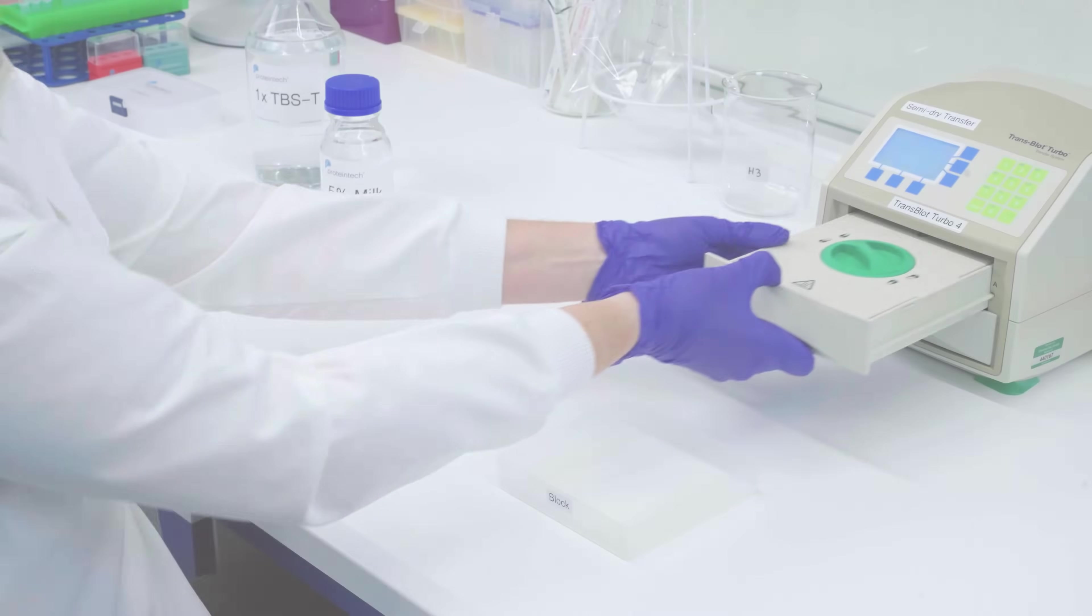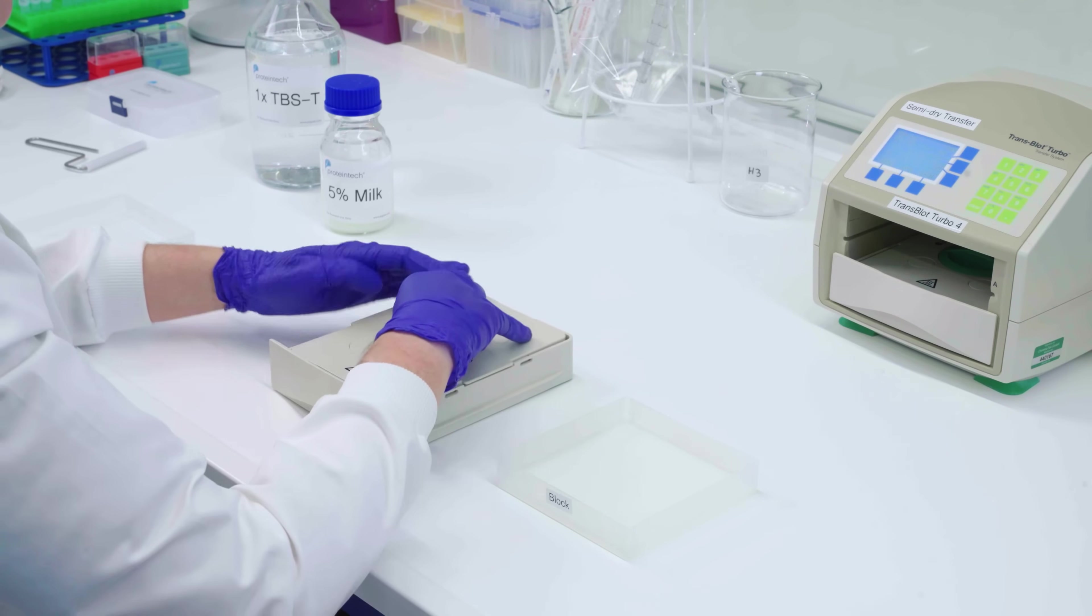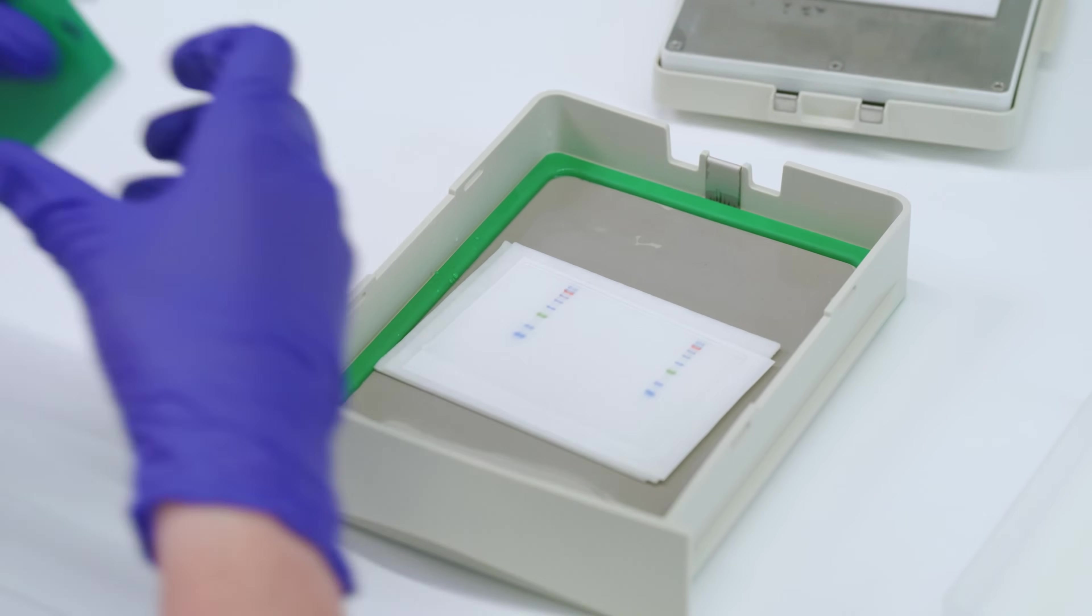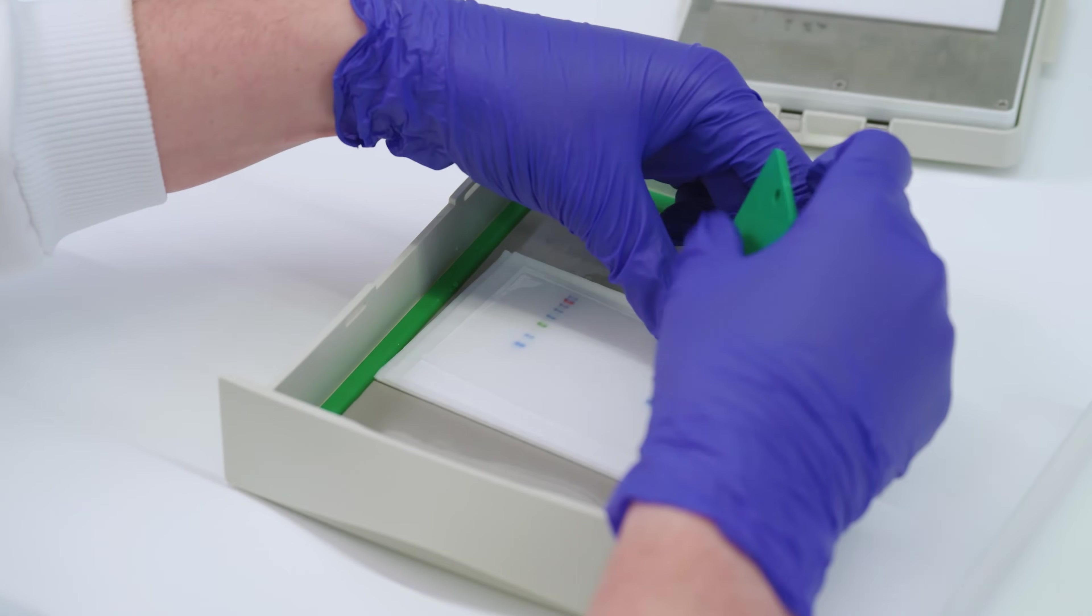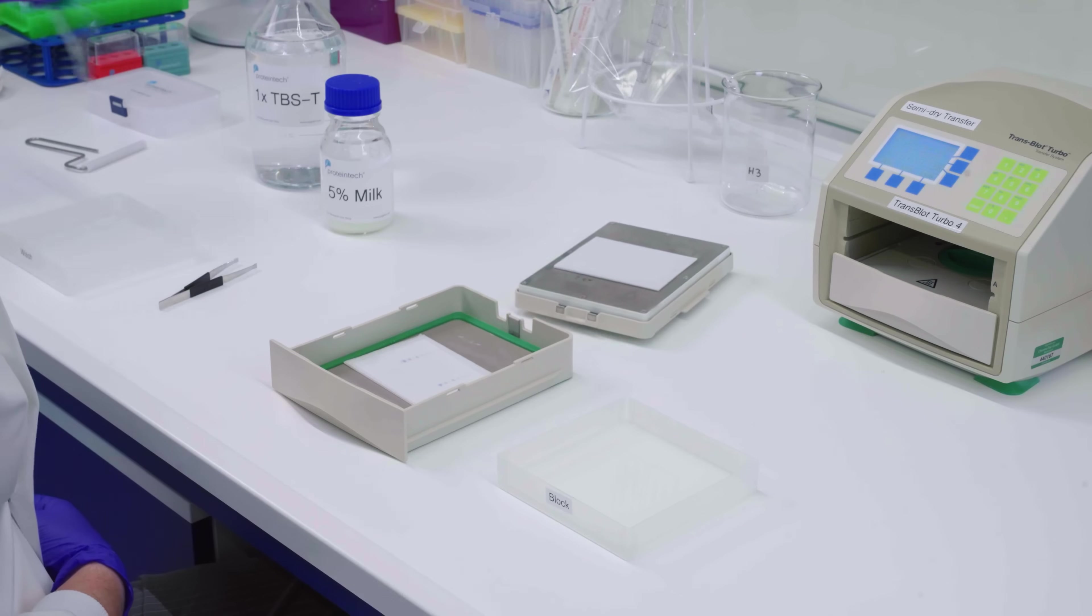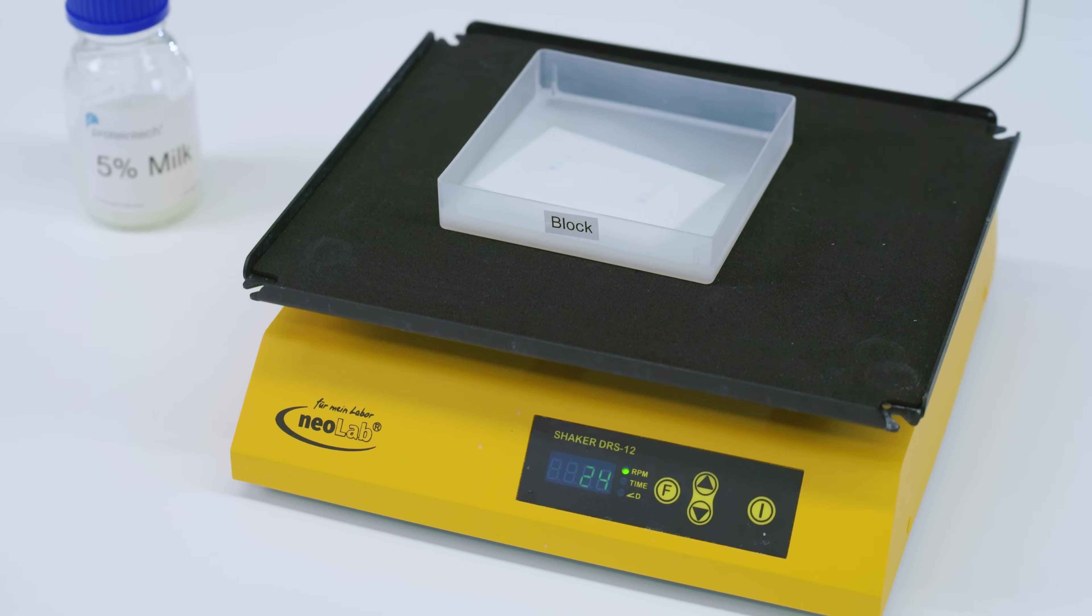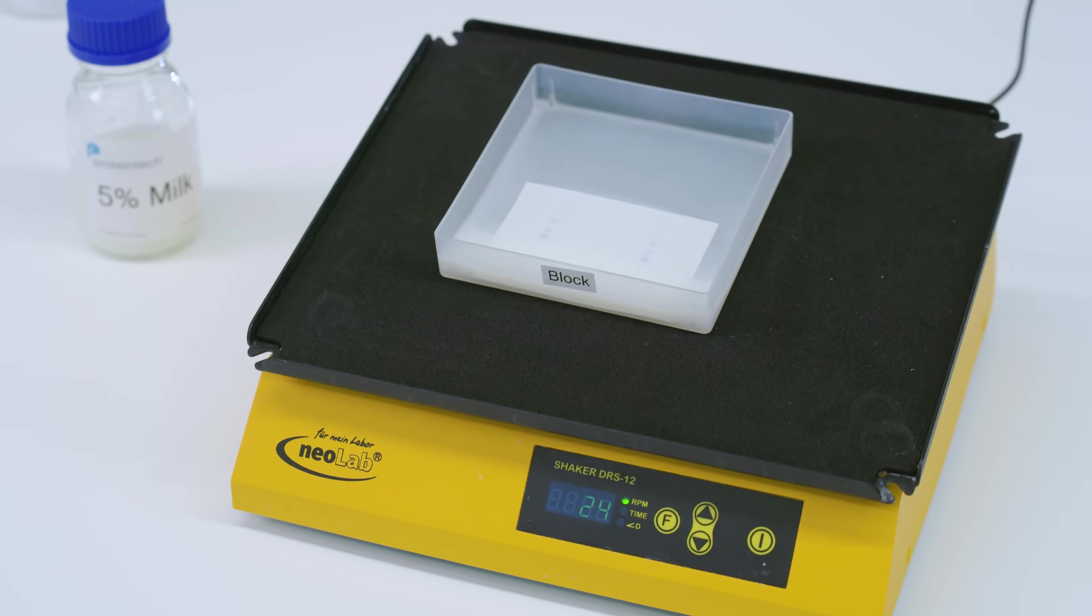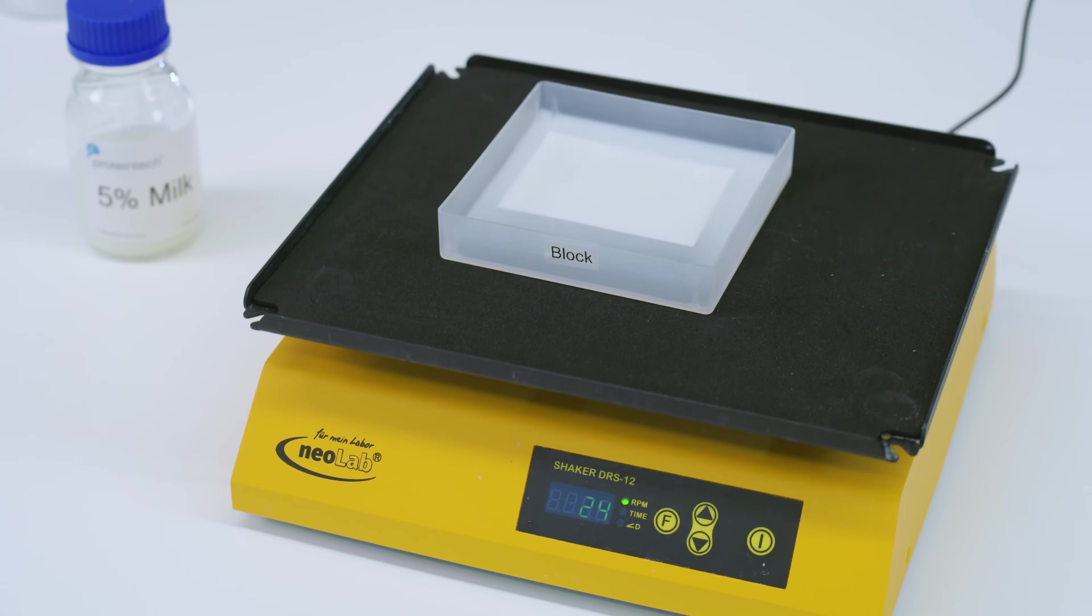To prevent nonspecific binding of the primary and secondary antibodies, the membrane should be blocked with a solution containing nonspecific proteins. Typical blocking solutions contain 5% nonfat milk or 2-5% bovine serum albumin in tris-buffered saline with tween 20. Incubate the membrane with blocking buffer under gentle agitation. It is recommended to incubate the membrane for 1 hour at room temperature or overnight at 4 degrees Celsius.